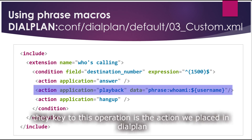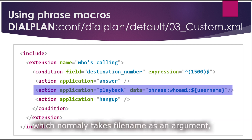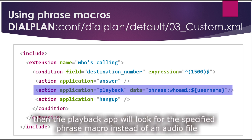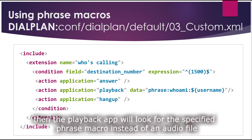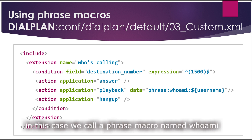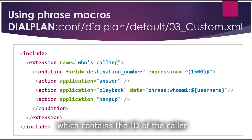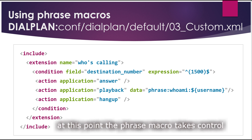The key to this operation is the line in the dial plan extension. When we look at the dial plan extension, we have a playback application which normally takes a file name as an argument, but in this case when it sees the word 'phrase' with a full colon, the playback will look for the phrase macro instead of an audio file. In this case we call a phrase macro named 'who_am_i' and give it the argument of the username variable, which contains the ID of the calling user. At that point the phrase macro takes control.